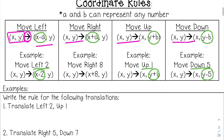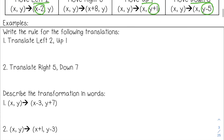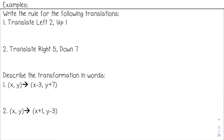Let's try to write out some coordinate rules. Number one: write the rule for translating left two and up one. Anytime you write a coordinate rule, you always start with (x, y) and an arrow. For left two, I'm going to subtract two from my x coordinate. And for up one, I'm going to add one to my y coordinate, giving (x, y) → (x − 2, y + 1).